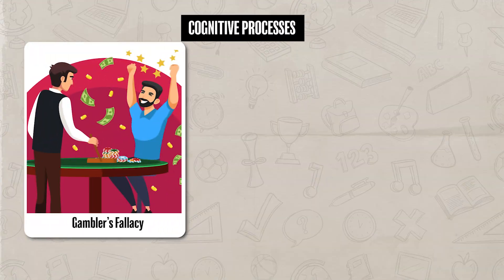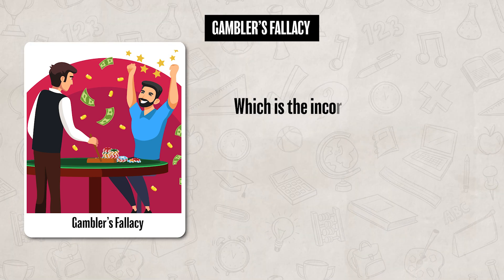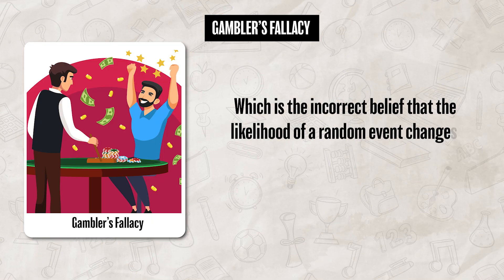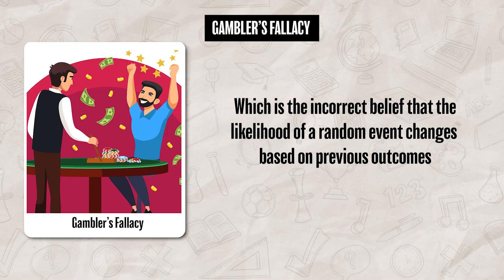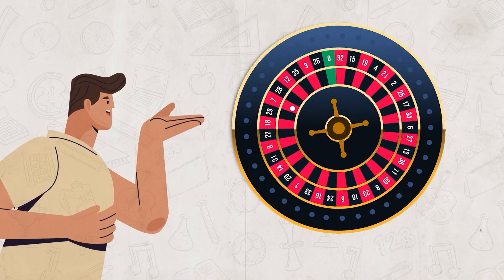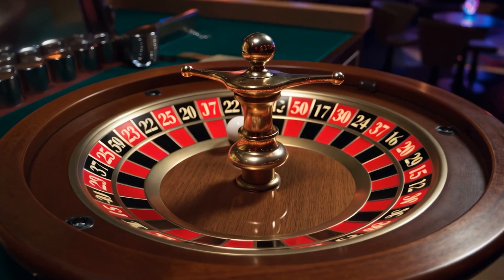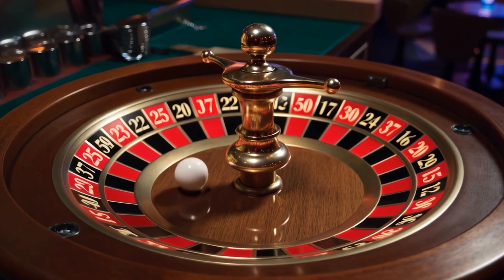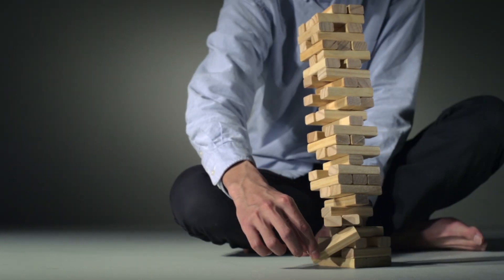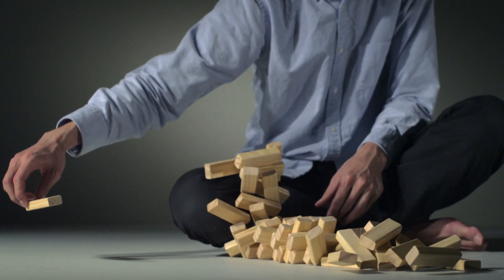Now that we have talked about how we think and solve problems, let's examine a couple of cognitive processes that can lead us to make some bad decisions. First is the gambler's fallacy, which is the incorrect belief that the likelihood of a random event changes based on previous outcomes. For example, imagine you're at the roulette table and the ball has landed on red 10 times in a row — you might believe black is due next, but this is a fallacy. Each spin is independent and the probability remains the same every time. Past outcomes don't influence future ones in a game of chance, and this kind of flawed thinking can lead to risky or irrational decisions.